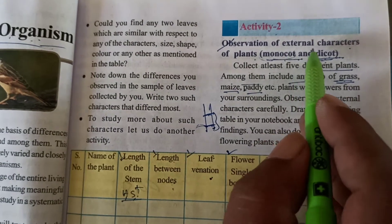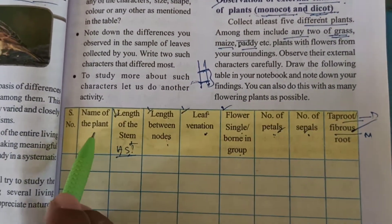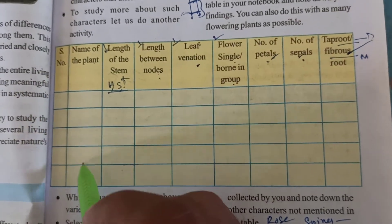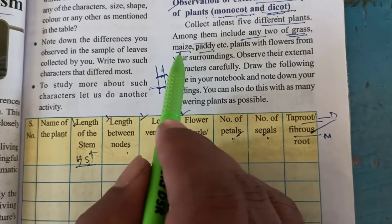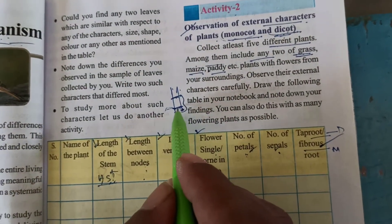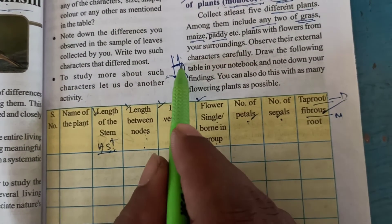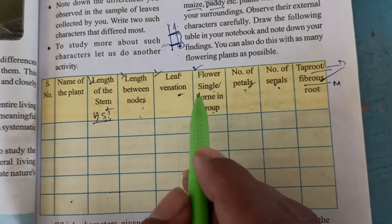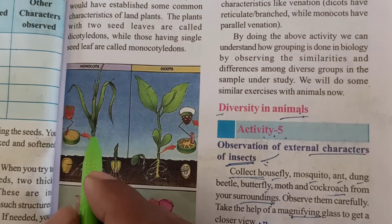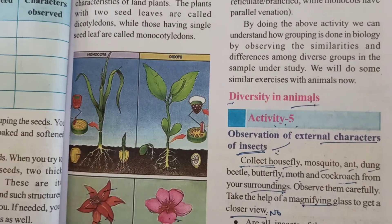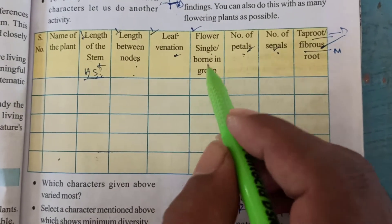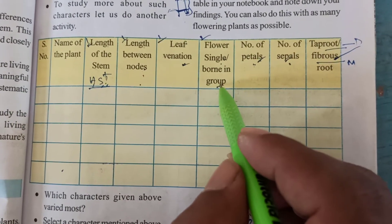Activity 2 is the observation of external characters of monocots and dicots. We note the name of the plant, the length of the stem, and the length between the nodes. Nodes are the joints on the stem — for example, on sugarcane. The space between two nodes is called the internode. Regarding flower position: in monocots like maize, paddy, and wheat, the flowers are in bunches, whereas in dicots like hibiscus, the flowers are single. So flowers are born singly in dicots and in groups in monocots.